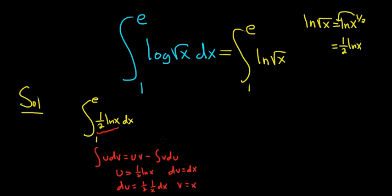So let's use our formula. So this is equal to u v. So it'll be 1 half x ln x, and we're going from 1 to e, minus the integral of v du. So the x's cancel here. So we just get 1 half dx, and we're going from 1 to e. Beautiful stuff.